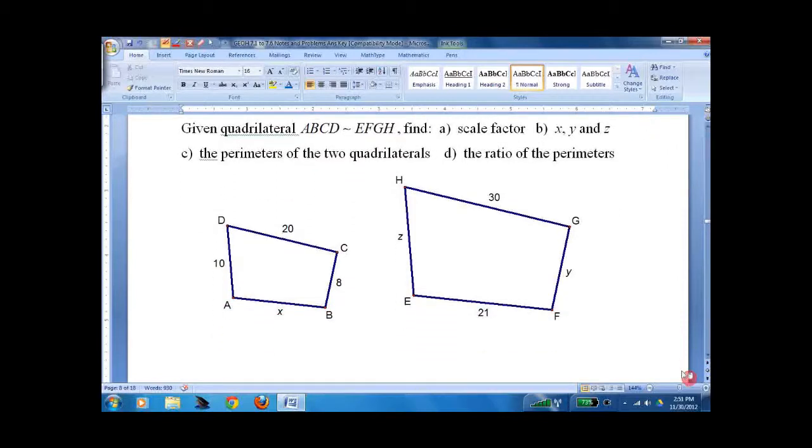Try this on your own. What's the scale factor? Find x, y, and z, and then find the perimeters of both quadrilaterals and the ratio of the perimeters. Pause it if you want, because now I'm going to do it. These line up like this, and just looking at them it's pretty obvious HG and CD line up, so these two line up. I'm going to go from bigger to smaller, as I tend to do, so scale factor is 30 over 20, which is 3 over 2.